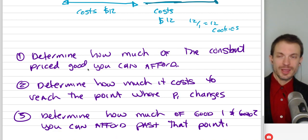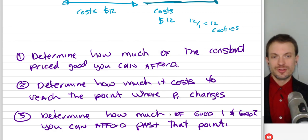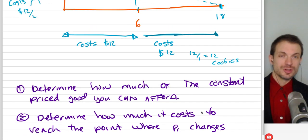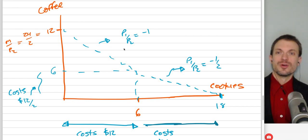Okay. Again, the strategy was just find out how much of the constant price good you can afford, determine how much it costs to reach the point where the price changes, determine how much of good one and good two you can afford past that point. Oh, and then notice I put here's my slope for the first portion of the budget constraint, and here's my slope for the second portion of the budget constraint, matching what we had found from earlier.